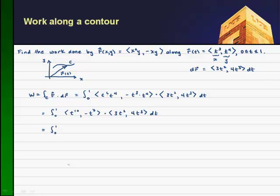So t to the 10th times 3t squared, I get 3, and t to the 10th and t to the 2nd. So I'm going to multiply like bases, I add the exponents, and this I'm going to add to the product of a minus t to the 7th, 4t cubed.